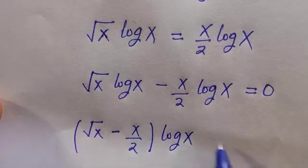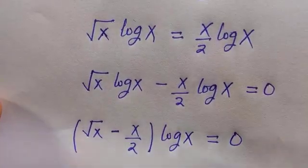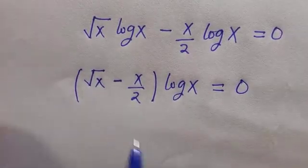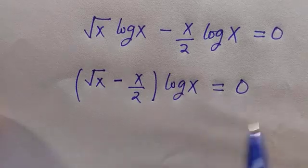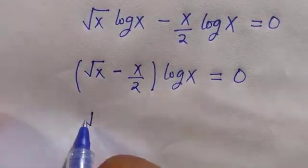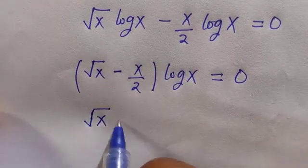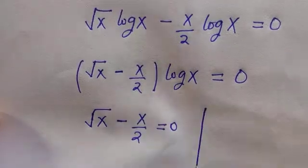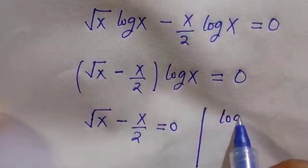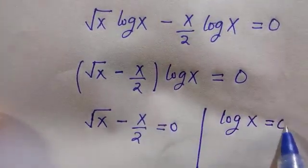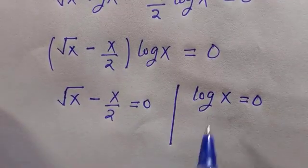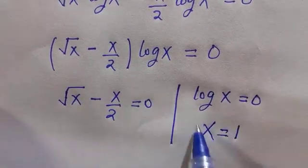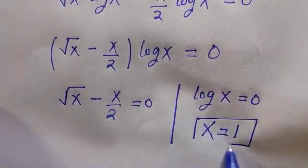We have log x times root x minus x over 2 equals 0. There are two possible things here: we let root x minus x over 2 equals 0, or log x equals 0. For the second one, if log x equals 0, definitely the value of x here equals 1, because log 1 equals 0.